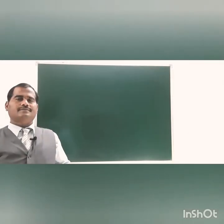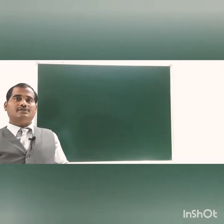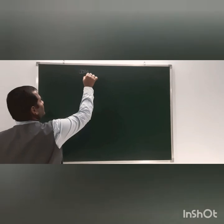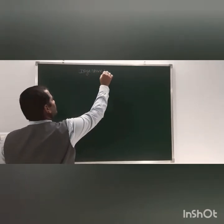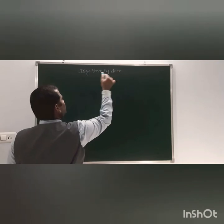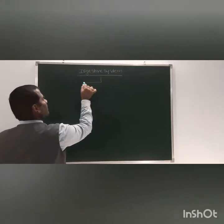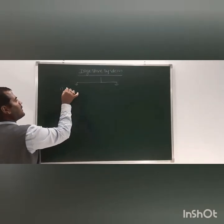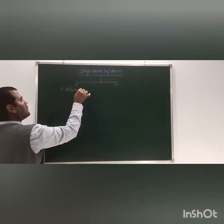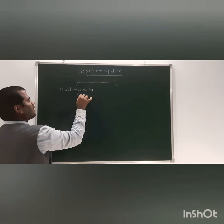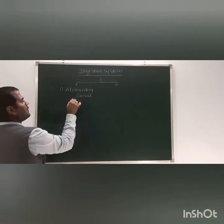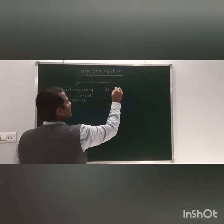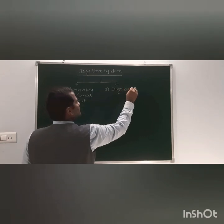The digestive system has two parts. First one is the alimentary canal, also called the gut. Second one is the digestive glands.